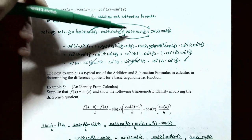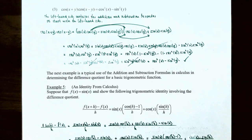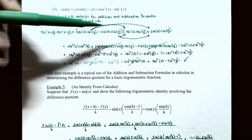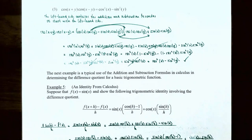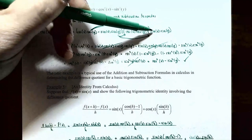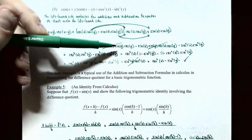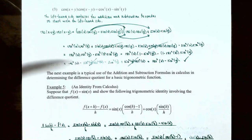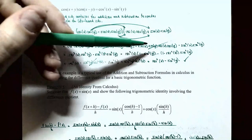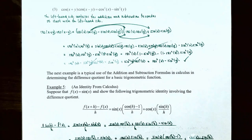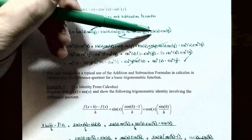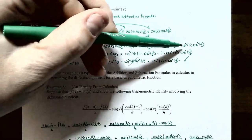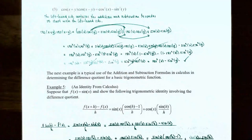Multiplying the first terms gives cosine squared of x times cosine squared of y. The outer terms give sine x cosine x sine y cosine y, and the inner terms give negative sine x sine y cosine x cosine y. The last terms give negative sine squared of x times sine squared of y. Notice the middle two terms are identical with opposite signs, so they cancel out.